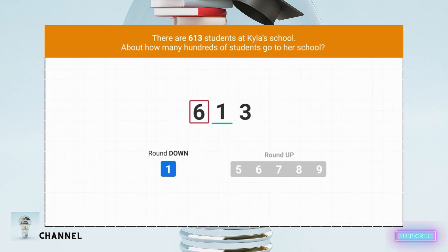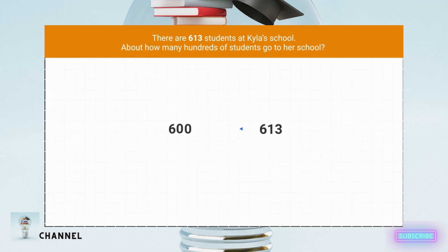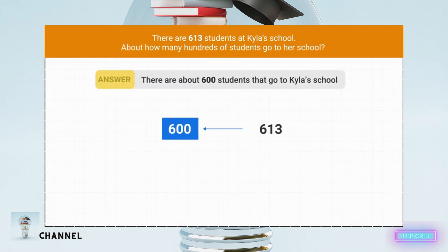What do we do to the circled digit? Because we're rounding down, the circled digit stays the same. Now we can round our number. What is 613 rounded to the nearest hundred? The six stays the same. Then we turn all the digits to the right into zeros. 613 rounds down to 600. This means that there are about 600 students that go to Kyla's school.